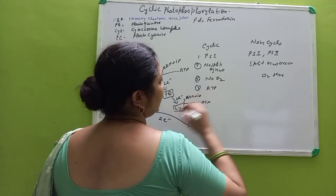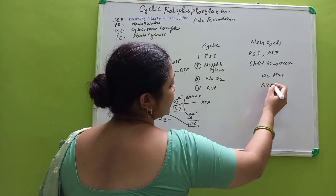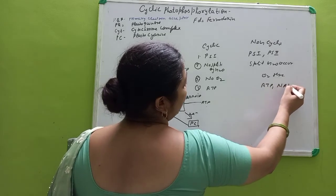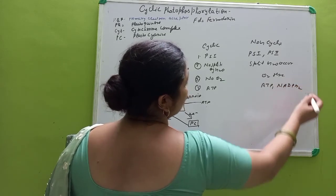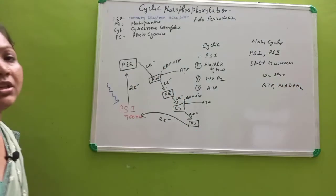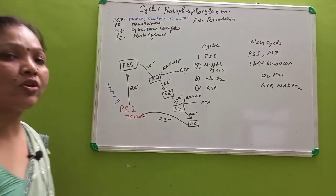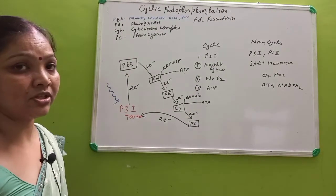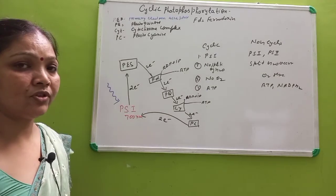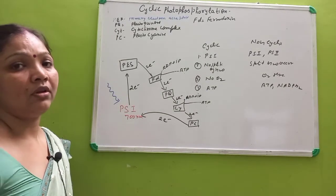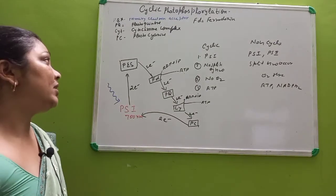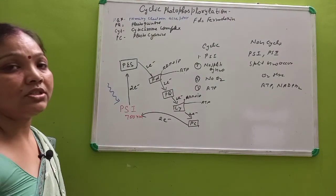The formation of ATP only occurs in cyclic, whereas in non-cyclic formation of ATP plus NADPH2 is occurring. So this is the difference between cyclic and non-cyclic photophosphorylation.